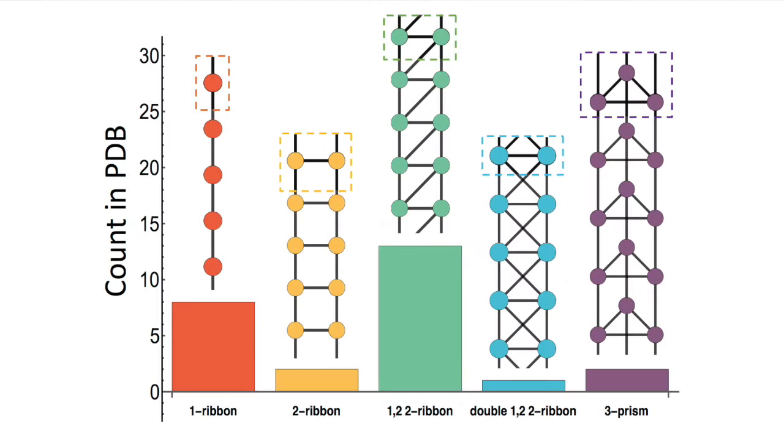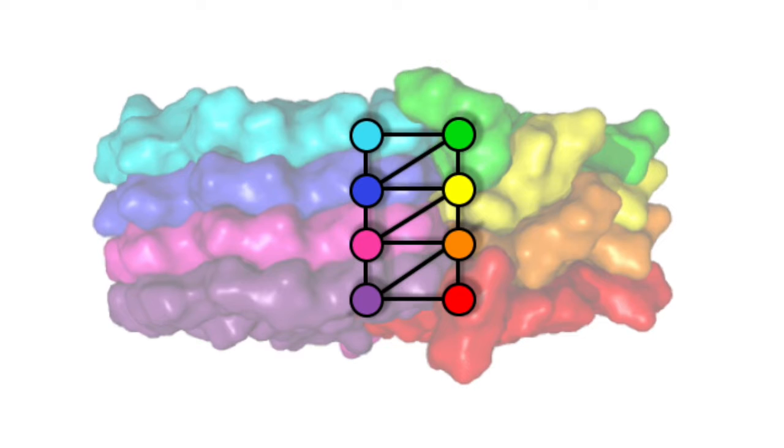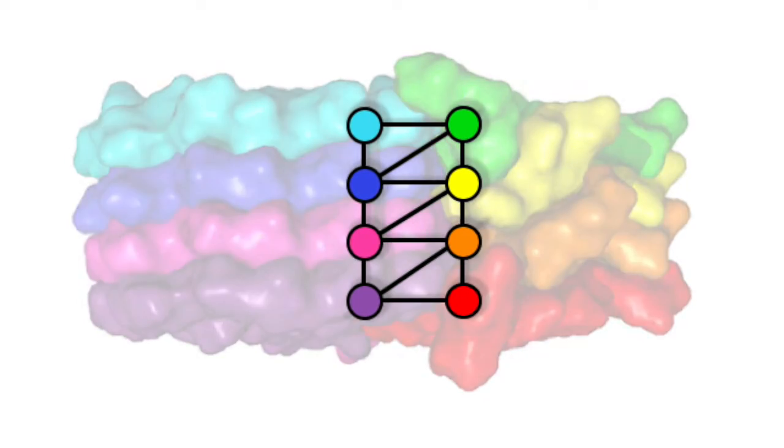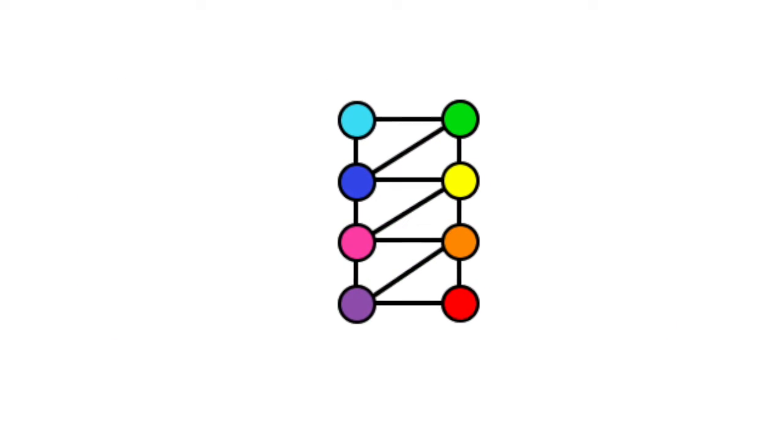Other fibrils can form different structures, some of which are simple and some of which are quite intricate. The 1-2-2 ribbon, however, is one of the two most common forms that we find in the protein data bank. The underlying network structure, or topology, of a fibril gives us a simple and general way to characterize its structure.